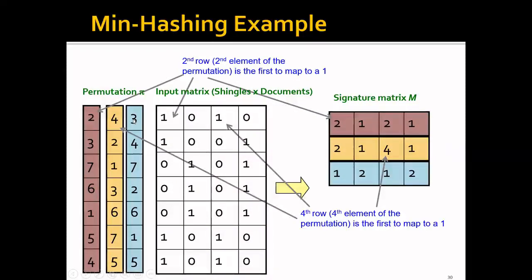And we can do similar stuff for the third permutation, which is the third hash function. And when this is all completed, we can get a signature matrix of three by four from the input matrix of seven by four.